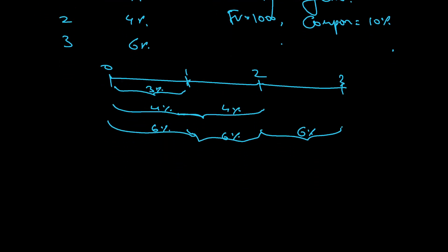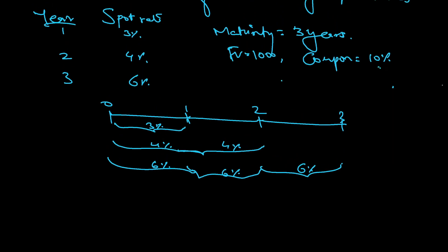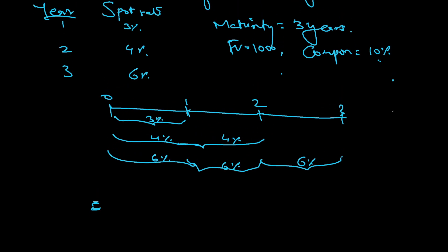Based on this information, how do I value the bond? Coupon is 10%, so present value of the bond equals present value of all the cash flows. What will be the cash flows? First, 100 for first year, 100 for second year, because 10% of 1000 is 100.